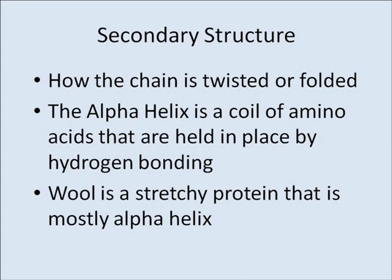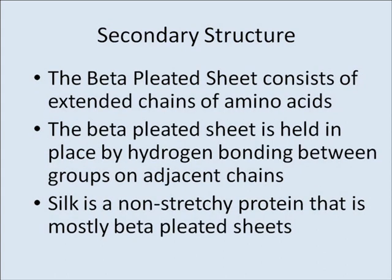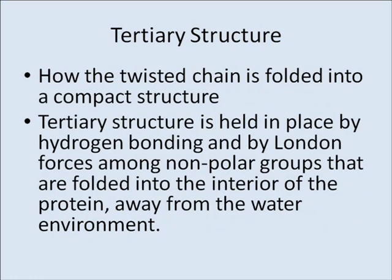Another type of secondary structure is the beta-pleated sheet, which consists of extended chains of amino acids. The beta-pleated sheet is held in place by hydrogen bonding between groups on adjacent chains. Silk is a non-stretchy protein that is mostly beta-pleated sheets. Tertiary structure is how the twisted chain is folded into a compact structure, held in place by hydrogen bonding and by London forces among non-polar groups folded into the interior of the protein, away from the water environment.